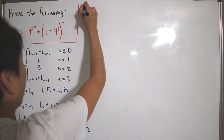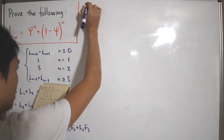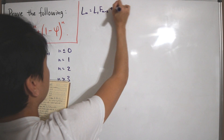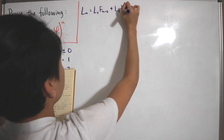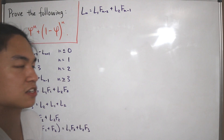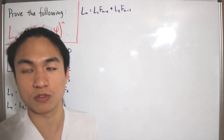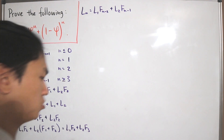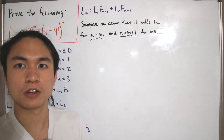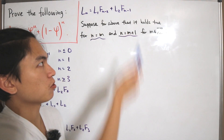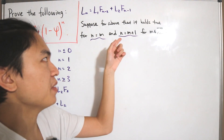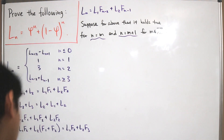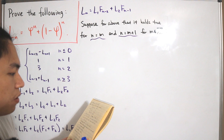Based on this pattern, we guess that for the nth Lucas number: L_n = L_1 · F_{n-2} + L_2 · F_{n-1}. To prove this holds for all integers, we apply mathematical induction. We suppose the formula holds for n = m and n = m+1 for some integer m.